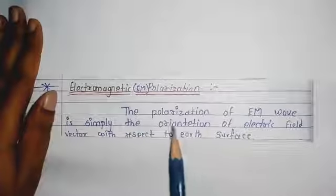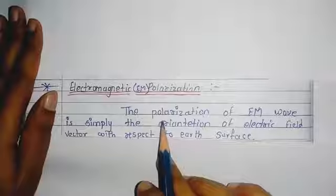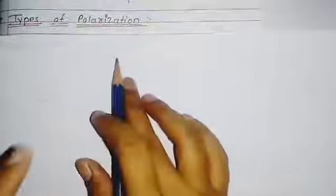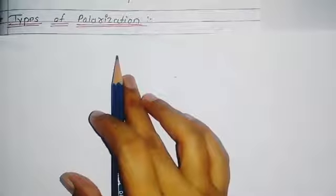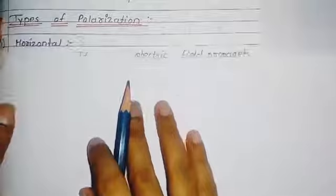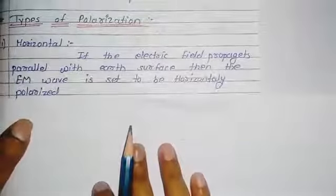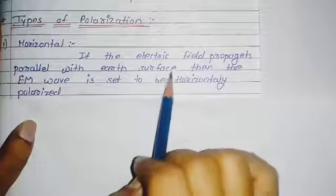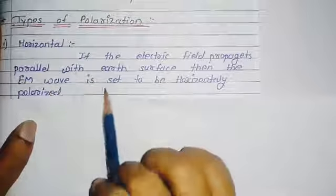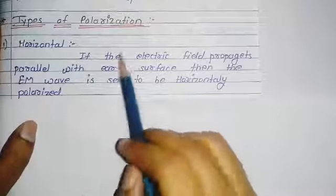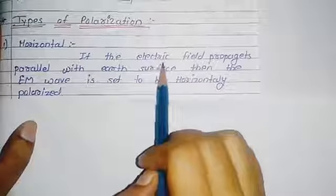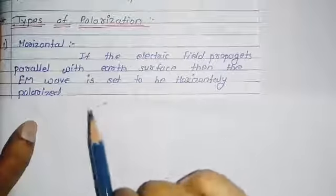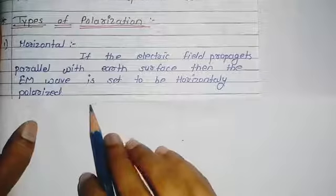There are four types of polarization. The first is horizontal polarization: if the electric field propagates parallel to the earth's surface, then the EM wave is said to be horizontally polarized.